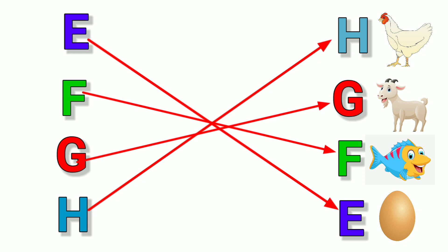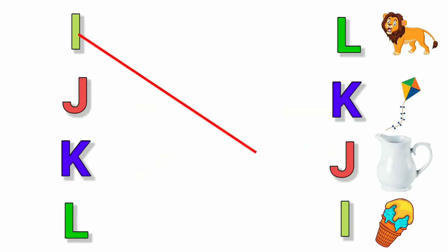H, H for Hen. I, I for Ice Cream. J, J for Jug. K, K for Kite.